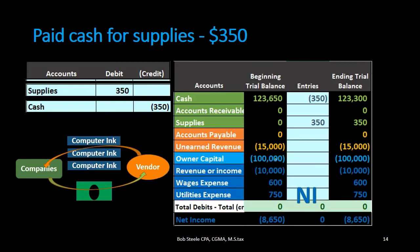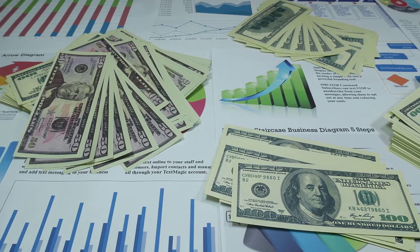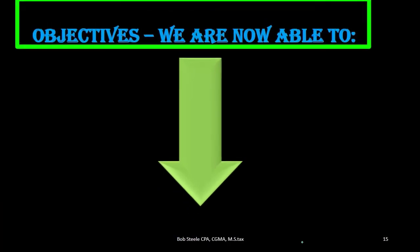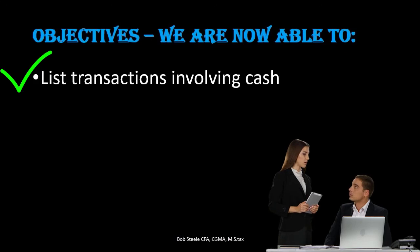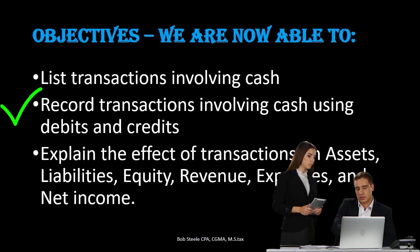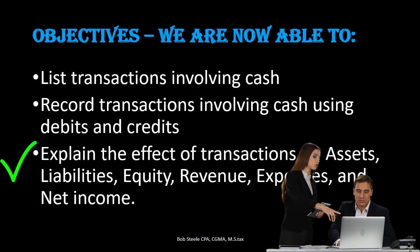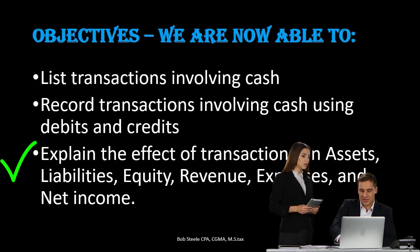The effect on the accounting equation: assets are going up and also going down — no net effect. One asset is increasing, one is decreasing. Liabilities remain the same, equity remains the same, and net income also remains the same. Supplies go on the books as an asset because they have not yet been used or consumed to help generate revenue, and therefore have not yet been expensed. We are now able to list, record, and explain the effect of cash transactions using debits and credits.